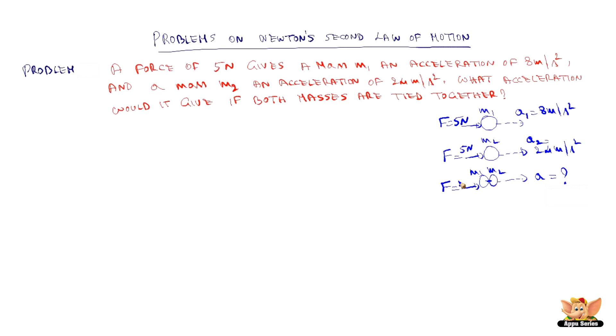So with the same force, with the same masses of two different objects, how it acts individually, how it acts when it is tied together? So for that, first we need to understand what is m1 and what is m2, and then we can find out A.